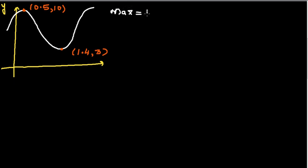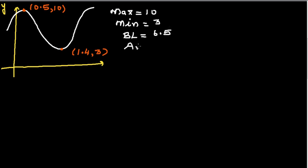The maximum is 10 and the minimum is 3. From the maximum and minimum you can find two facts: the baseline and the amplitude. The baseline is the average of the two, which is 13 divided by 2, giving 6.5. The amplitude is the distance from the baseline to the maximum — from 6.5 to 10 is 3.5, and from 3 to 6.5 is also 3.5. So the amplitude is 3.5.